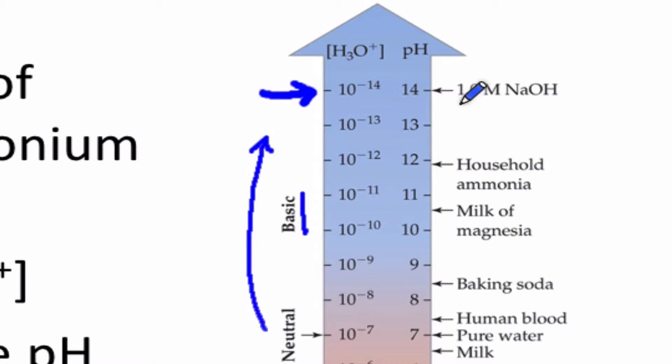Here are some benchmarks. One molar sodium hydroxide solution has a pH of 14. Household ammonia, about 12. Milk of magnesia, about 10.5. Baking soda, about 8.5. Human blood is a little bit basic, but we're getting close to 7, and pure water shows up right at 7 there.